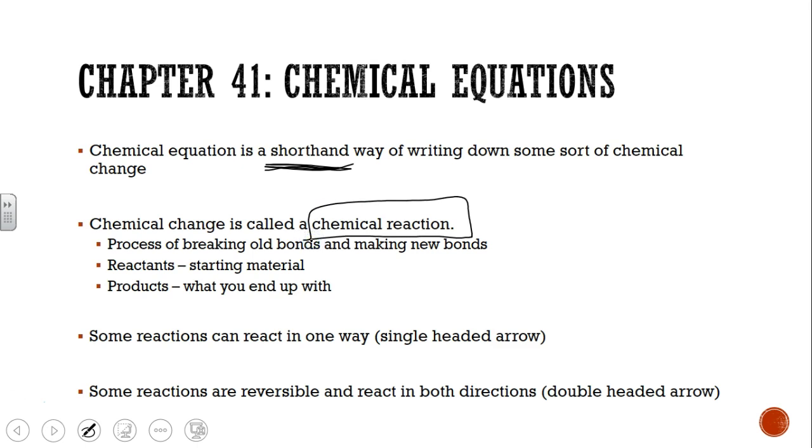The reaction is really the thing that you see. Let's say you're watching a bonfire—that's a chemical reaction, that's the thing you see. Chemical equation is what we write down in order to represent that chemical change or chemical reaction. The process of the chemical reaction is where you break bonds and then you rearrange them and you make new bonds.